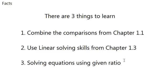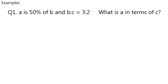So this is question 1. A is 50% of b and bc is 3 to 2. What is a in terms of c?